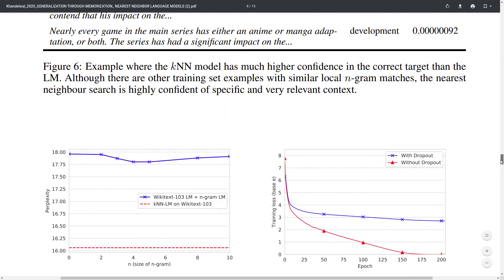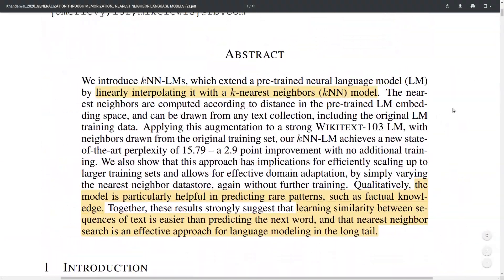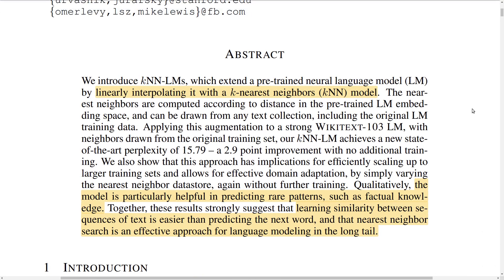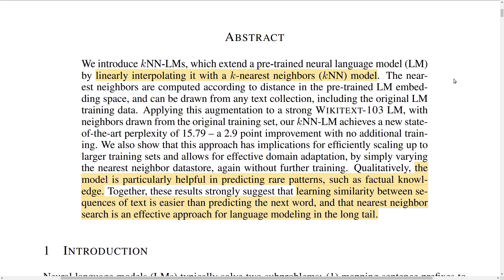Overall, it's a very interesting approach combining K-nearest neighbor methods with language models, particularly relevant for language modeling cases involving many facts, where it could improve the fluency of language models. One limitation is that the two components — the standard language model and the K-nearest neighbor search model — are not fine-tuned together but trained separately. It could be interesting to explore joint fine-tuning of the two components to improve performance.